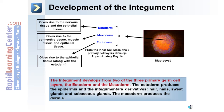The integument develops from 2 of the 3 primary germ cell layers: the ectoderm and the mesoderm. The ectoderm produces the epidermis and the integumentary derivatives — the hair, nails, sweat glands, and sebaceous glands. The mesoderm produces the dermis.